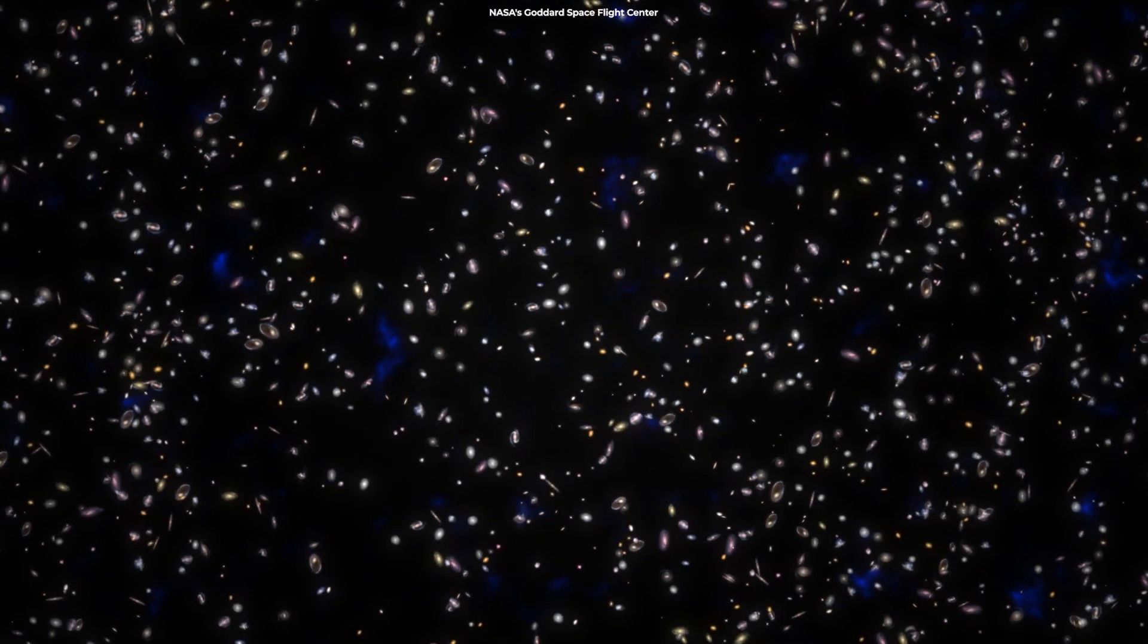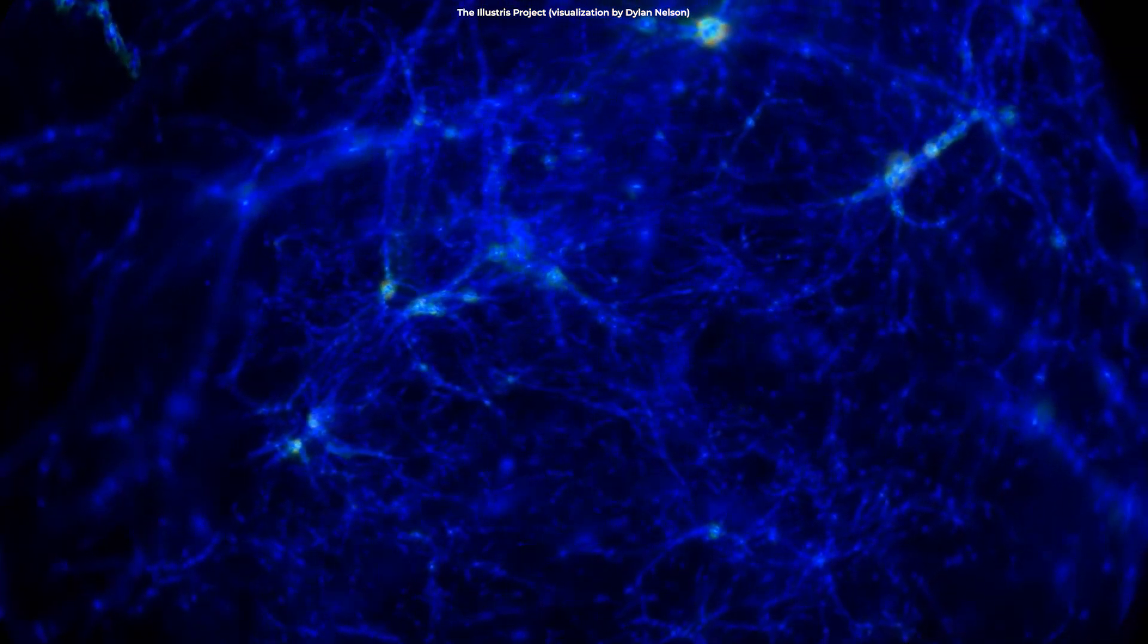As the universe expanded, those fluctuations got bigger and bigger, and the universe turned into regions of higher and lower densities of matter, thus, the filaments and voids.